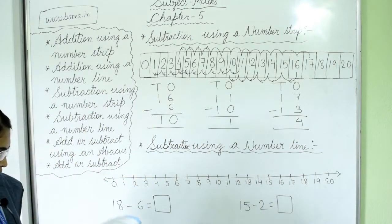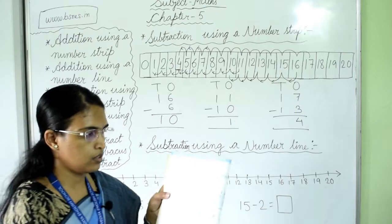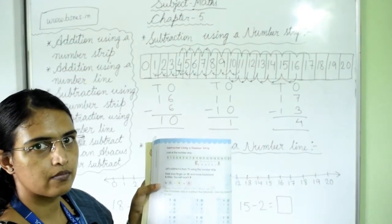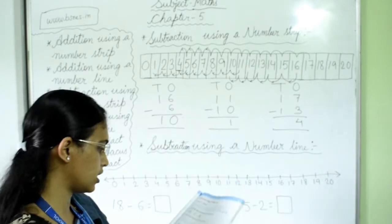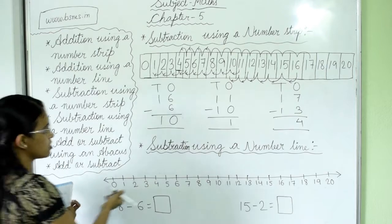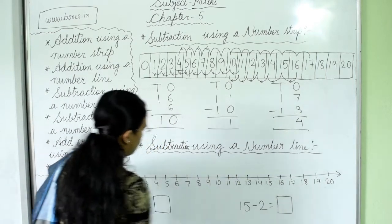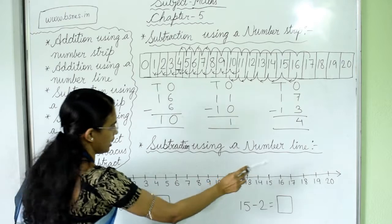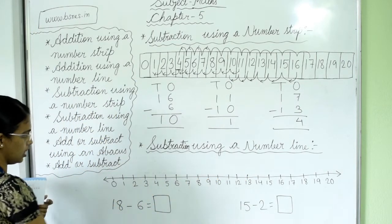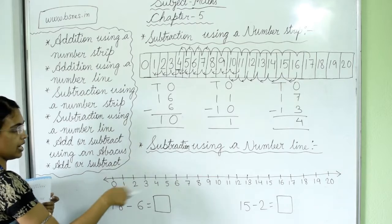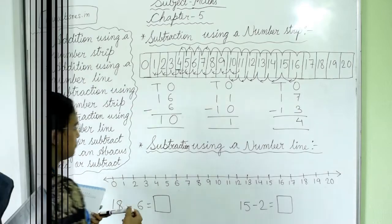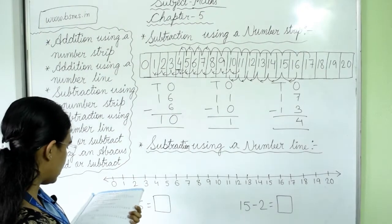In this way, do the rest of the sums with the help of this number strip — this is your homework. Now turn the page. The next topic is subtraction using a number line. We have already used this number line for addition; now we will use it for subtraction.